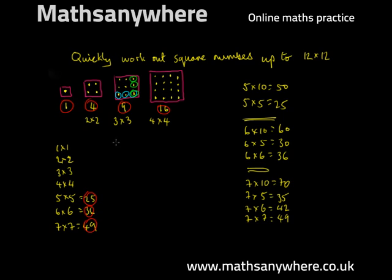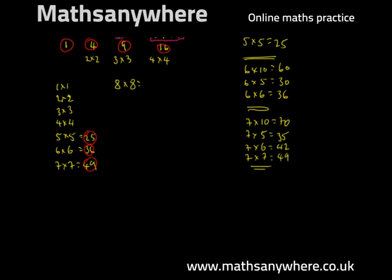Eight times eight, I would say that's equal to eight times ten, which is 80, minus two lots of eight. Eight times two equals 16. Eighty, which is ten times eight, minus 16. Eighty minus ten is 70, minus another six is 64. So eight times eight is 64.